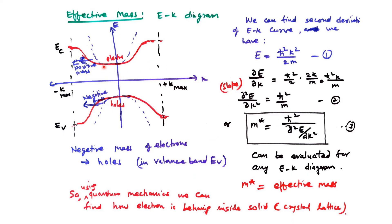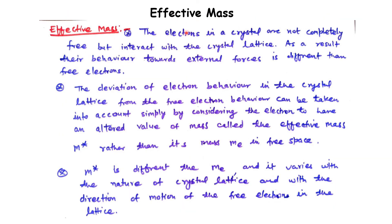Electrons in a crystal are not completely free; they interact with the crystal lattice and experience forces due to the nucleus. As a result, their mass differs from that of free electrons. This altered mass is known as the effective mass, denoted m*. While the free electron mass is mₑ in free space, m* is different and varies for different crystals and with the direction of electron motion.